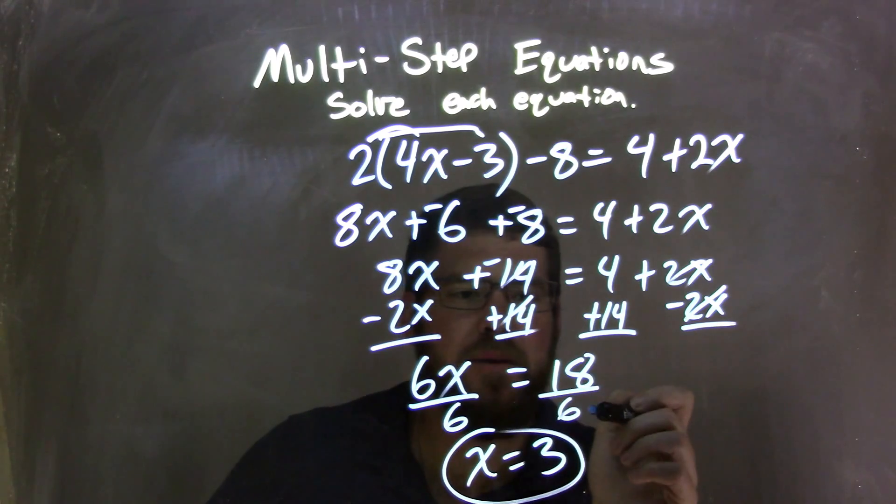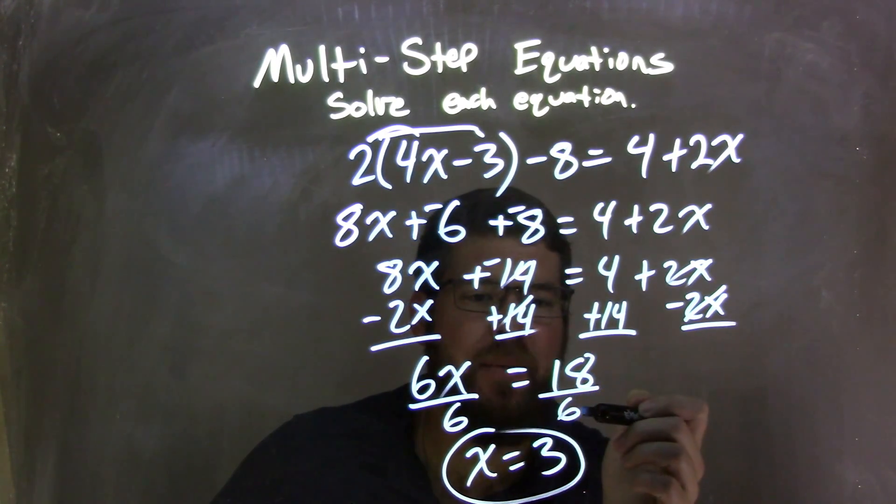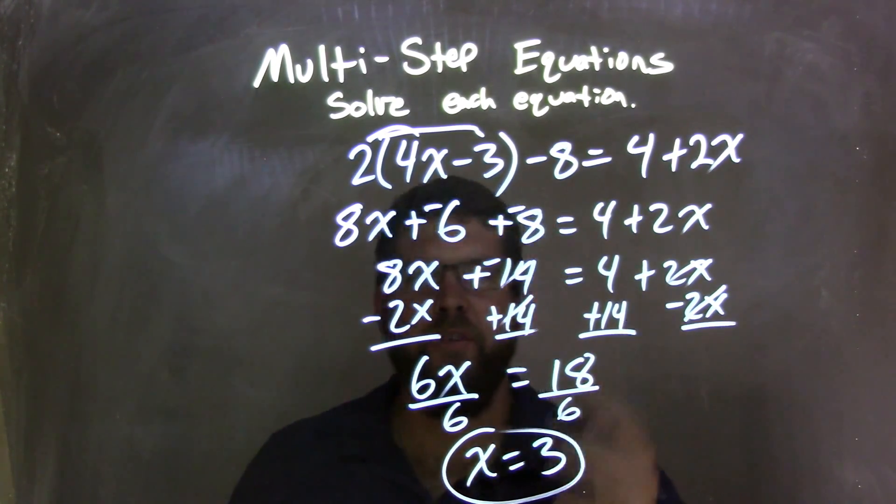I then divided by 6 to both sides, leaving me with x equals 18 divided by 6, being 3, and so my final answer here, after all this time, is x equals 3.